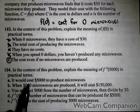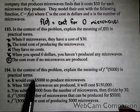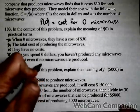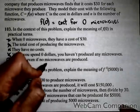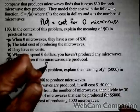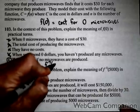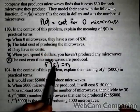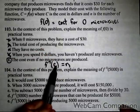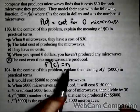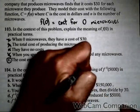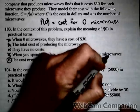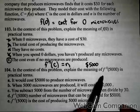Now, in the context of the problem, explain the meaning of f^(-1)(5000) in practical terms. When we're doing an inverse, it swaps the domain and range, or swaps our input and output. So we might say f^(-1)(c) = n. This is important because now we know the inverse takes in cost and gives out number of microwaves. So that 5000 is $5,000 and its output is going to be the number of microwaves.